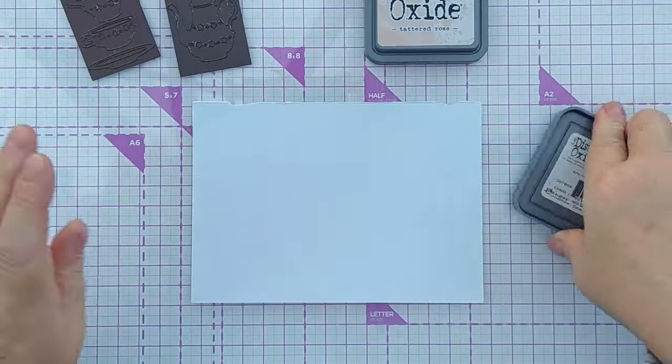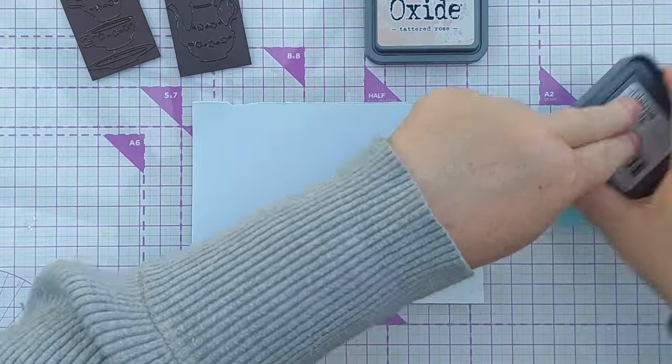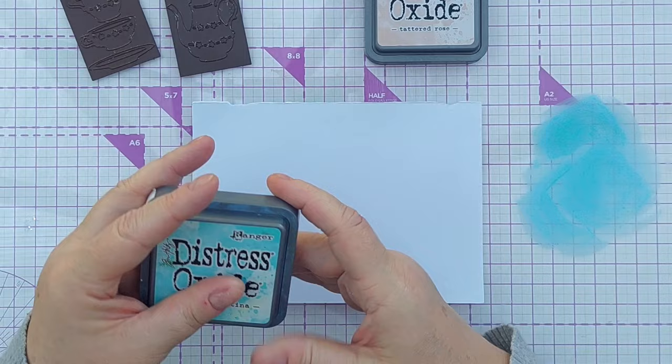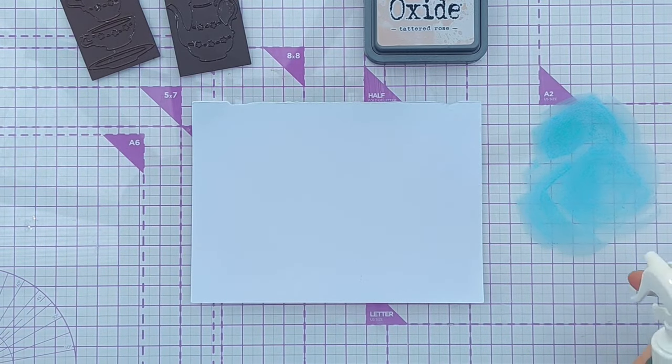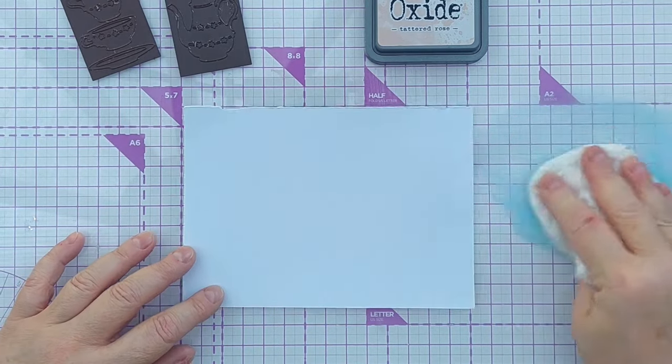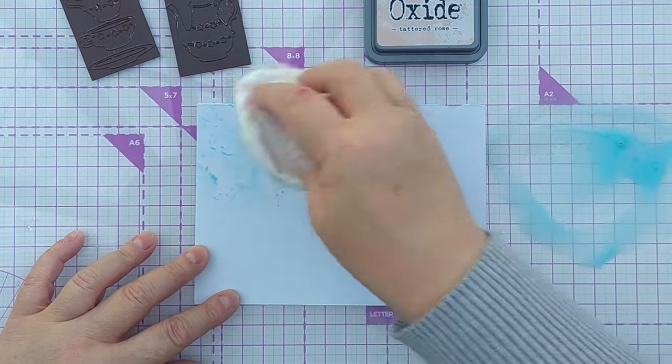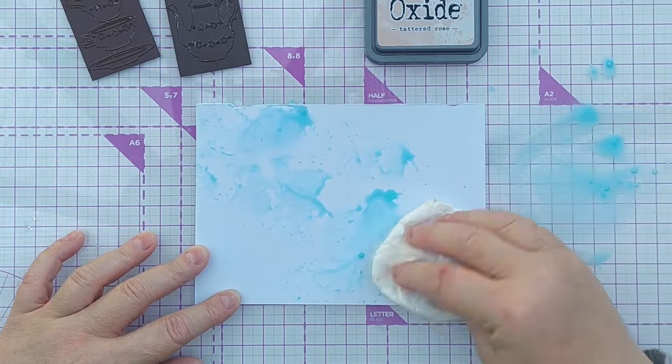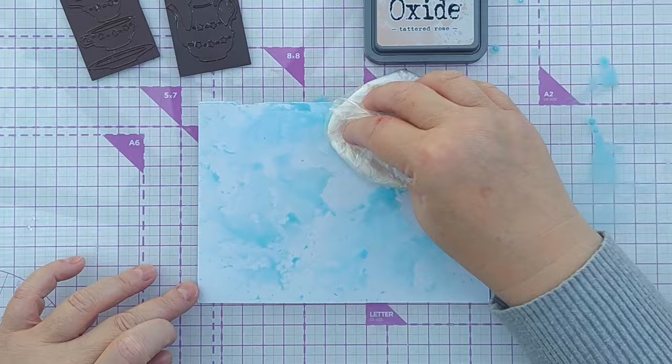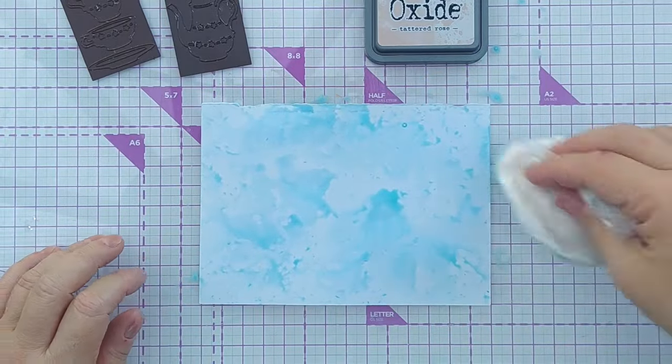To get going today I'm going to smush some salvage patina on this piece of smooth white cardstock. So I've added the ink to my glass mat, added some water to turn it into a paint and now I'm going to pick it up with my smusher and smush it on, not covering everything, leaving some white peeking through.